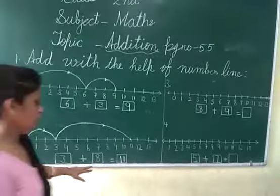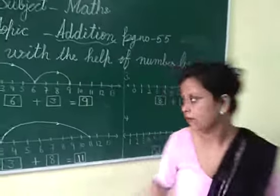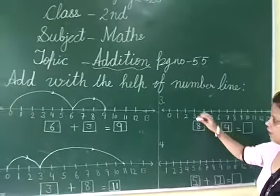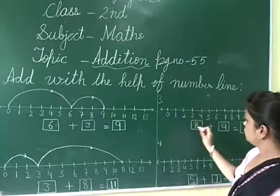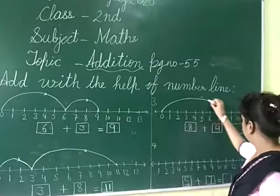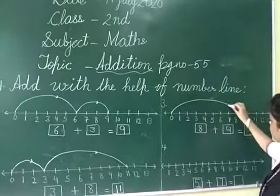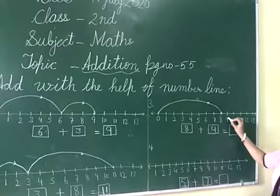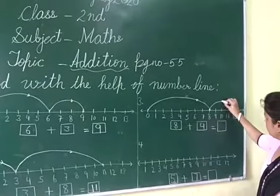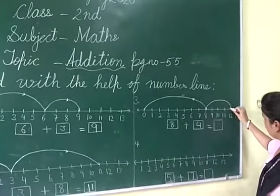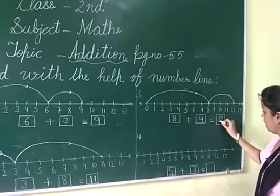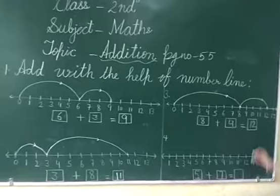Third problem: 5 plus 4. We will start from 5, then add 4. The answer is 9. For another problem, 2 plus 4, we start from 2 and jump forward 4 times.